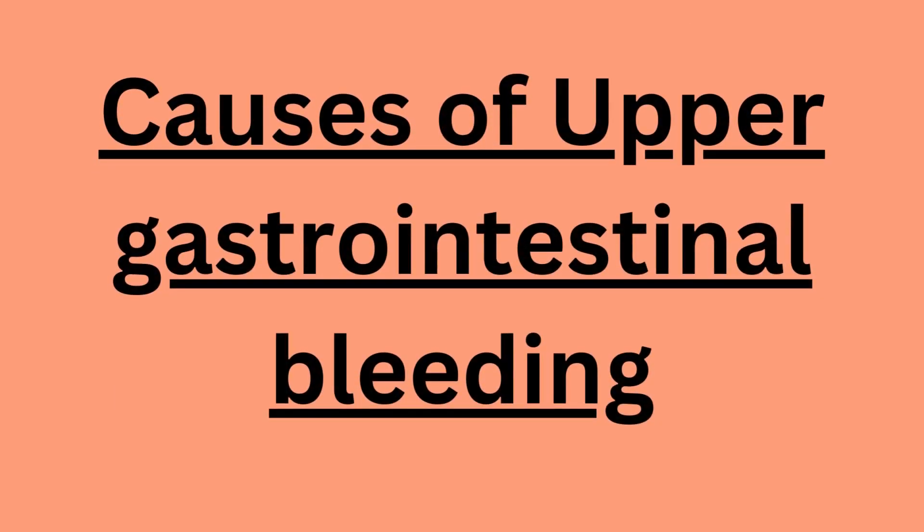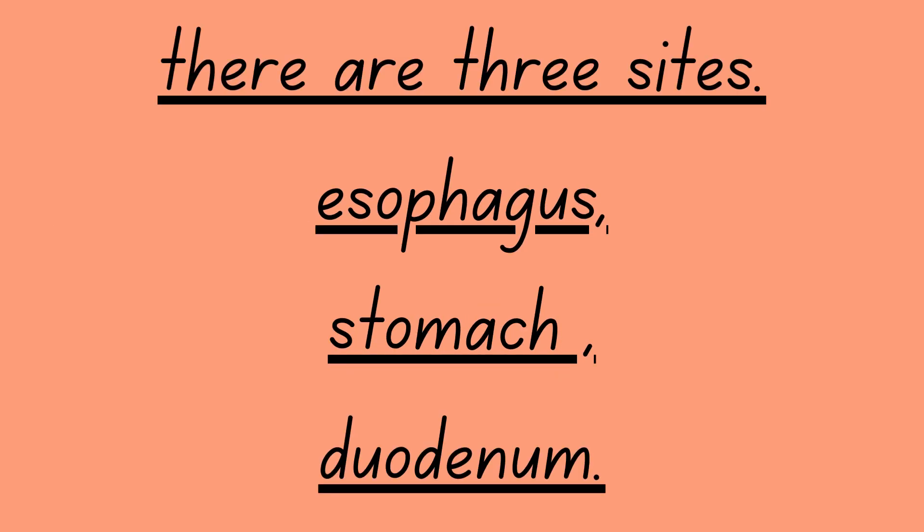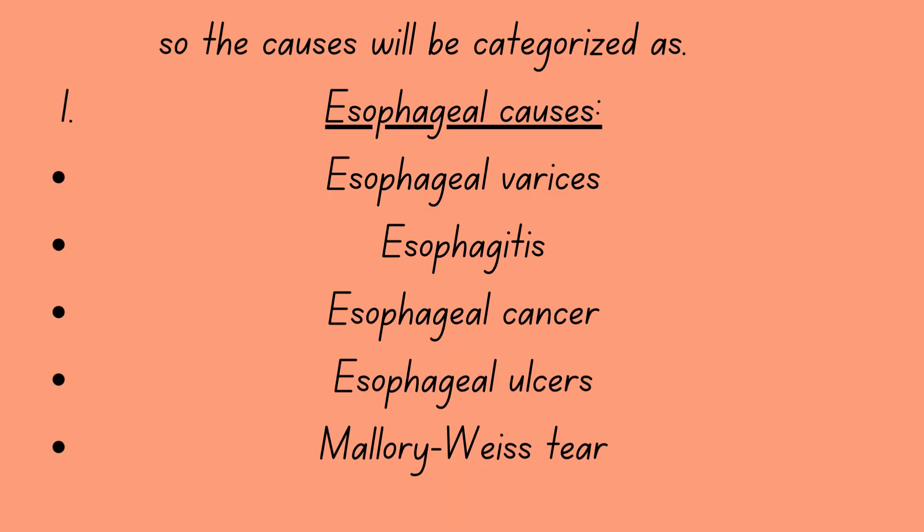Causes of upper gastrointestinal bleeding. Causes depend on the site of bleeding. There are three sites: esophagus, stomach, and duodenum. The causes will be categorized accordingly. Number one: esophageal causes.